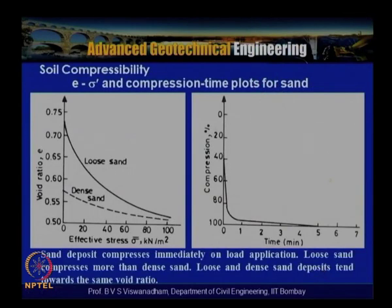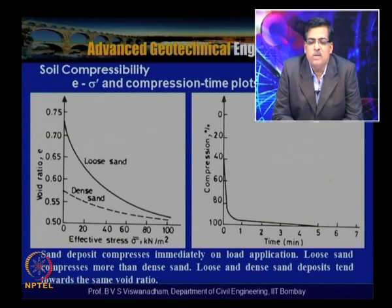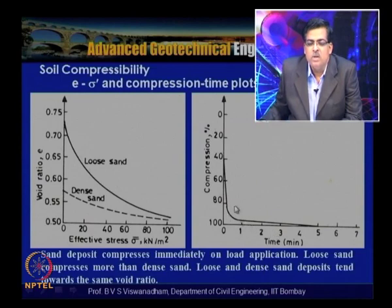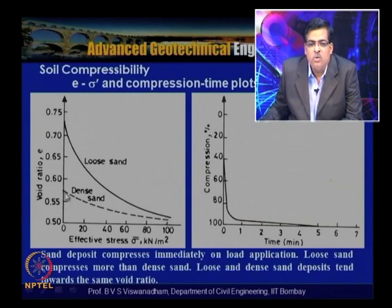Now we look at the soil response to stress-controlled loading for sandy soils. Sands undergo compression relatively faster. The e versus sigma-dash and compression-time plots for sand are shown here. Within a short span of 1–2 minutes, sand undergoes compression. Loose sand reduces its void ratio from about 0.75 to around 0.52, while dense sand shows less reduction, though both converge toward the same void ratio at higher effective stresses.